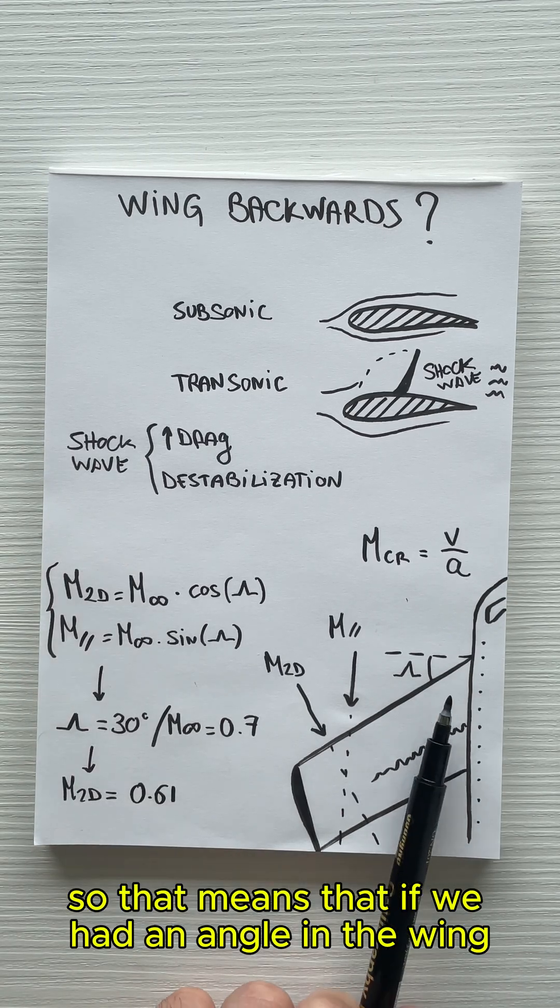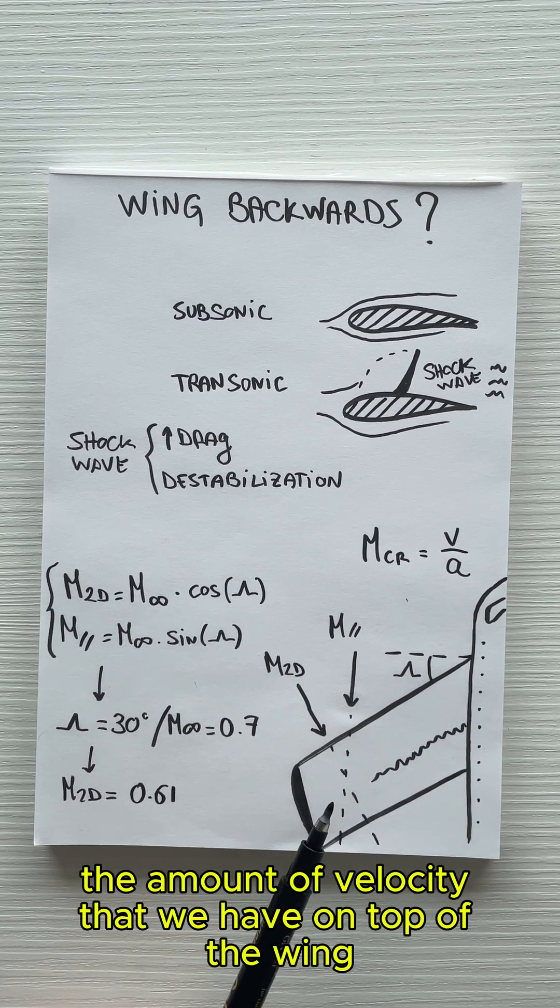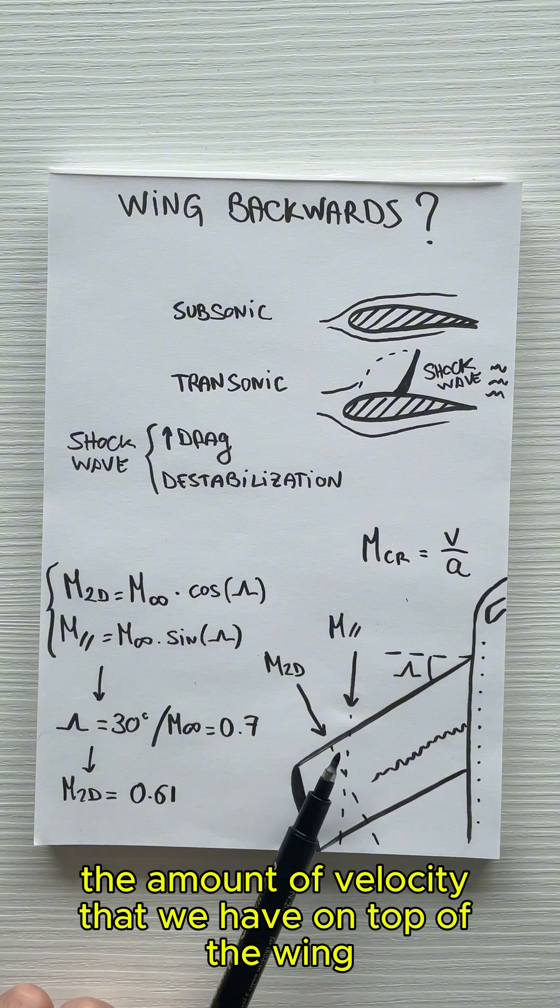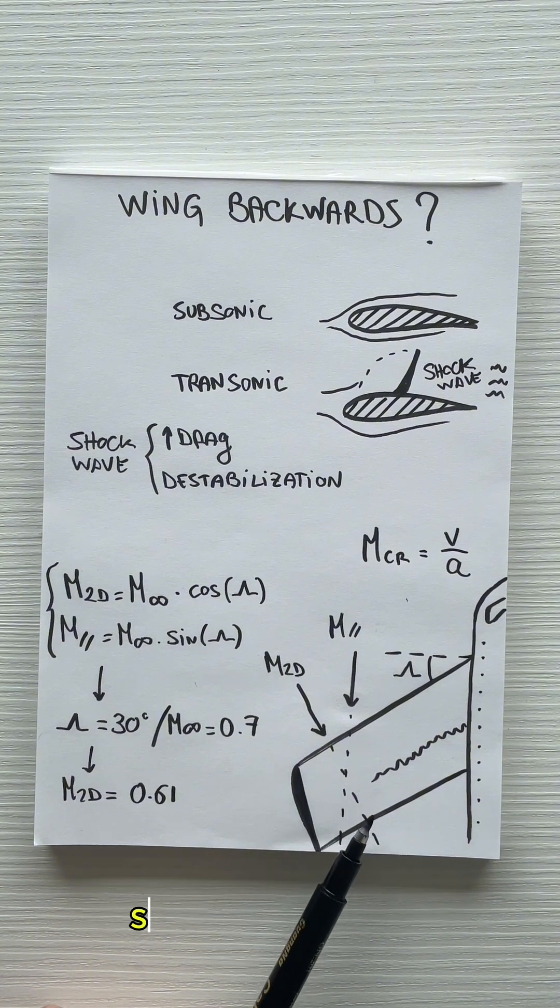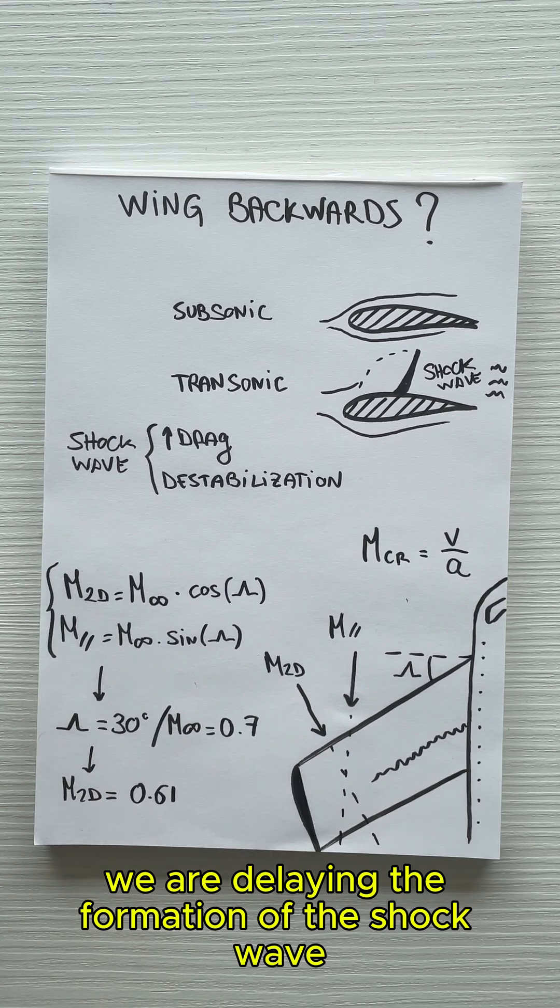That means that if we had an angle in the wing, we can lower the amount of velocity that we have on top of the wing. So in other words, we are delaying the formation of the shockwave.